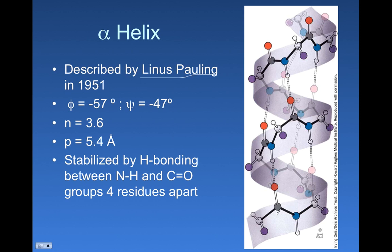And so he was able to make a model that sort of got R groups away from each other, so they weren't going to bump into each other and cause steric strain, but also had bond distances that would allow for productive hydrogen bonds to form and form this nice helical shape.